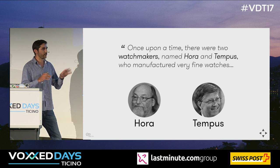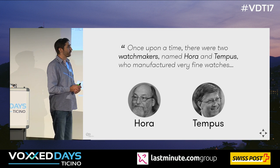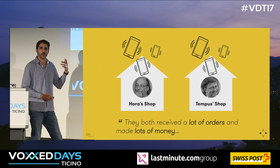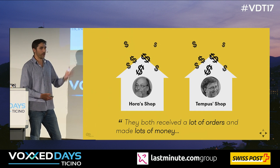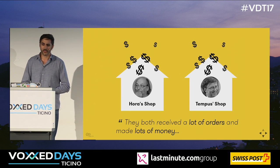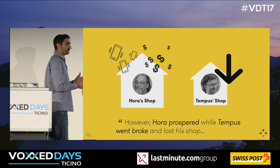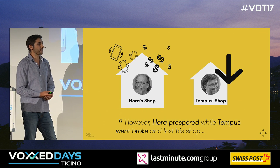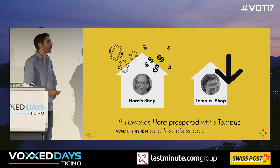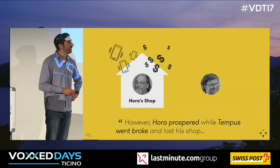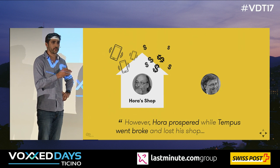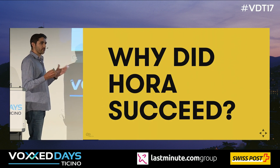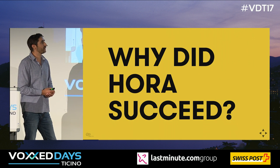Both of them produced very nice, very fine watches. There was Hora and Tempus, and both produced really nice watches. They were the only ones in town producing watches, and it was running very well. Both received a lot of phone calls, had orders, produced watches, and earned a lot of money. At some point, Hora was still doing really well, however Tempus somehow didn't make a lot of money anymore and went out of business completely.